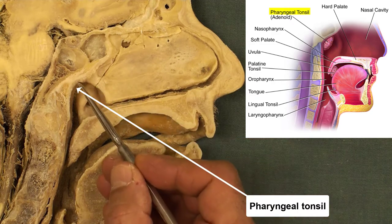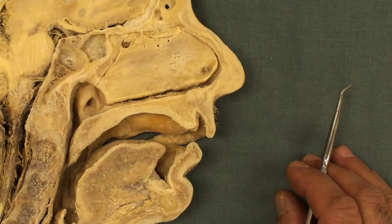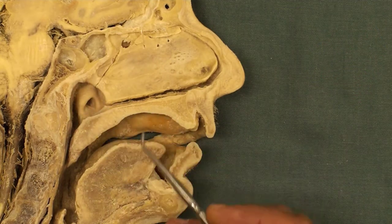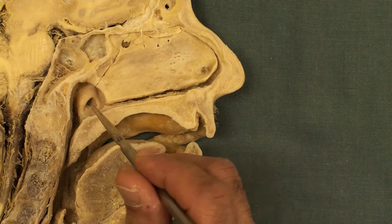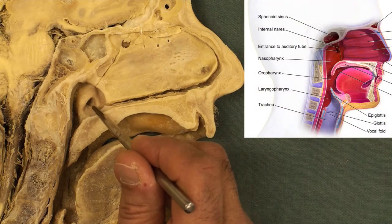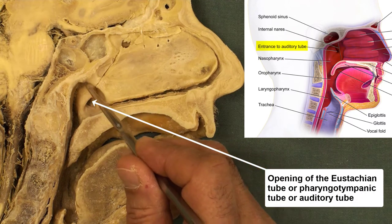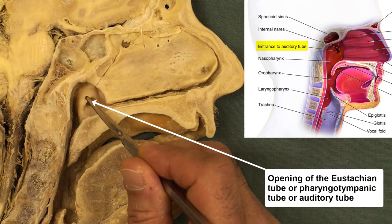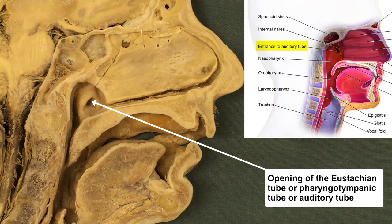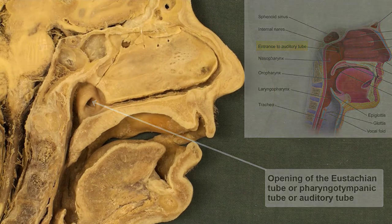The pharyngeal tonsil is active at the earliest stage of life, but is now replaced with connective tissue. On the lateral wall of the nasopharynx, you can see the opening of the eustachian tube, or pharyngotympanic tube, that connects the nasopharynx to the middle ear. It helps to equalize the pressure on both sides of the eardrum, or tympanic membrane.